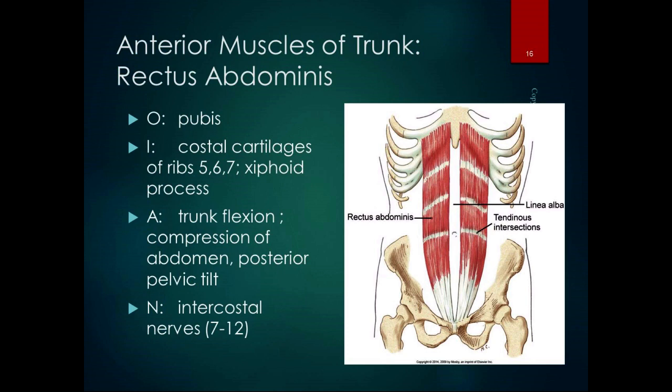Rectus means 'strap,' so it's that strap of muscle going up both sides. In between the rectus abdominis is a line of connective tissue called the linea alba — 'white line.' There are dysfunctions of the linea alba where it becomes separated, called diastasis recti, which can happen after pregnancy or injury and can be treated. The action of rectus abdominis is trunk flexion and compression of the abdomen, and it's part of the force couple for posterior pelvic tilt, along with the hip extensors and the rest of the abdominal muscles except transverse abdominis.